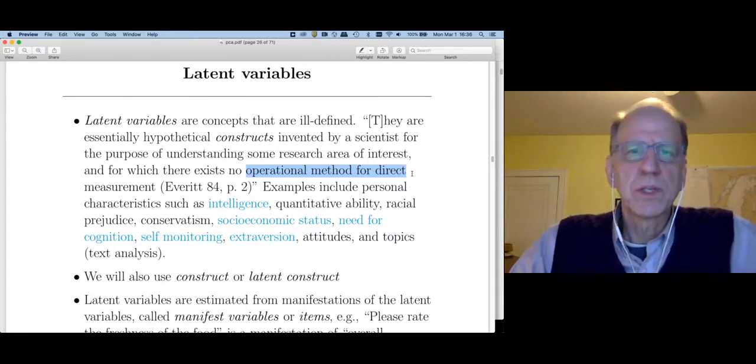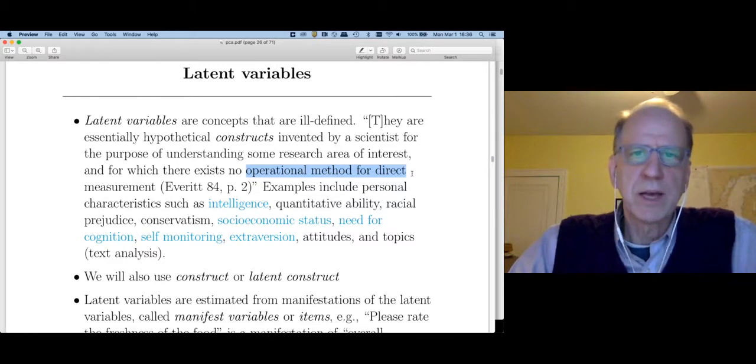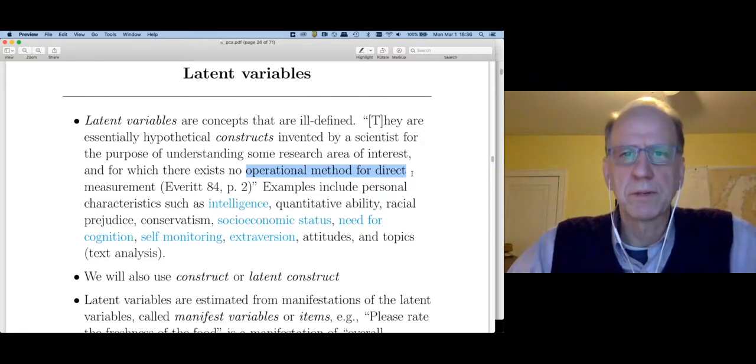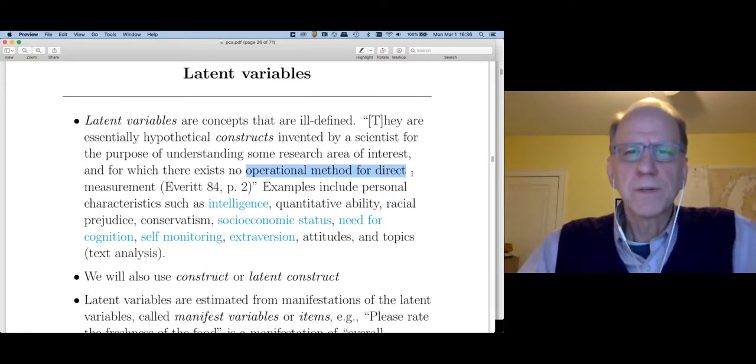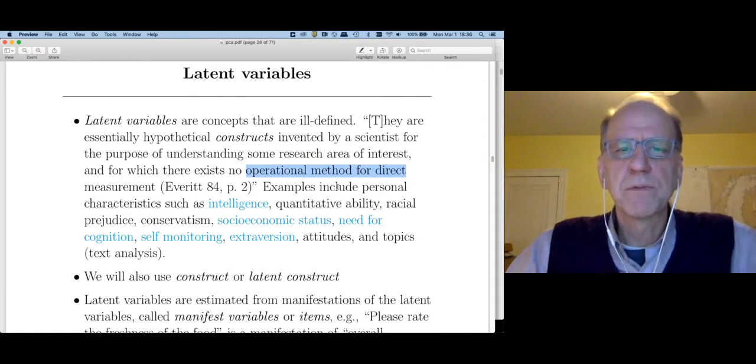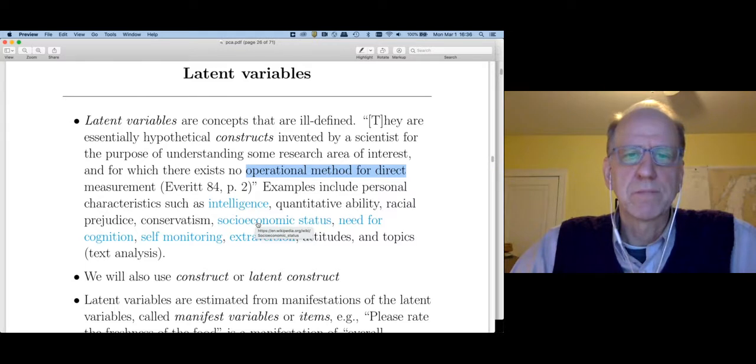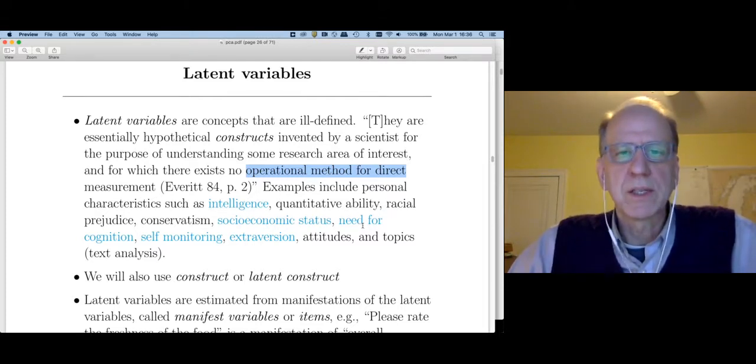A latent variable is essentially a hypothetical construct invented by the scientist for the purpose of understanding some research area of interest. And for which there exists no operational method for direct measurement. So for example, if you wanted to study my height, it would be very easy to measure that. There's an operational method for measuring my height. You take out a ruler and be done with it. But what if there are other types of variables, like your intelligence, or socioeconomic status, or any number of personality traits, like your need for cognition, meaning are you the type of person who likes to think?